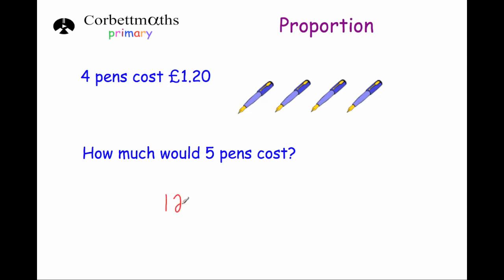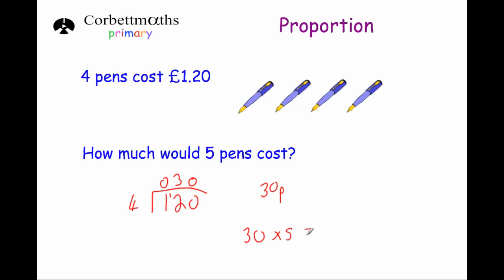So we're going to do £1.20, or 120 pence, divided by four. Four into one doesn't go, so we write zero remainder one. Four into twelve goes three times, and four into zero is zero. So one pen costs 30 pence. Now to find the price of five pens we just need to do thirty times five, which gives us £1.50.